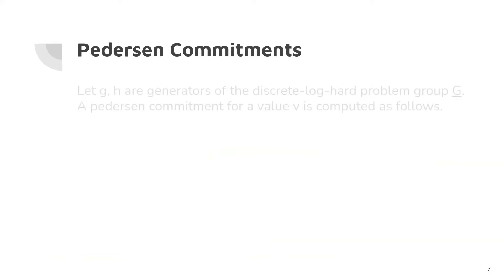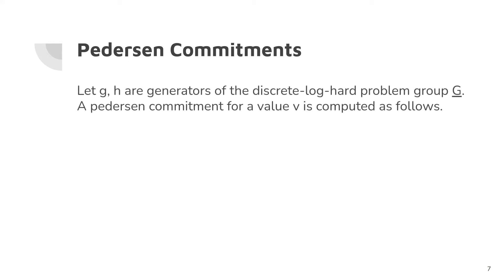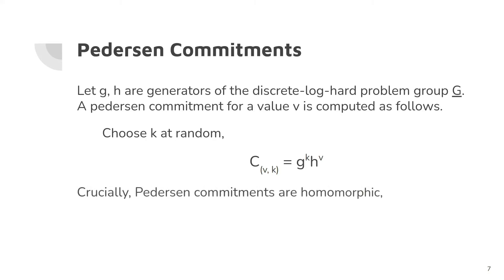Pedersen commitments are based on the discrete log problem. Assume there are two generators g and h, but we don't know the relation between g and h. A Pedersen commitment for a value v and a secret key k is g^k · h^v. Even though the value v is chosen from a small range, due to the random secret key, we can perfectly hide the value inside the Pedersen commitment. Also, Pedersen commitments are additively homomorphic, as shown in the equation.